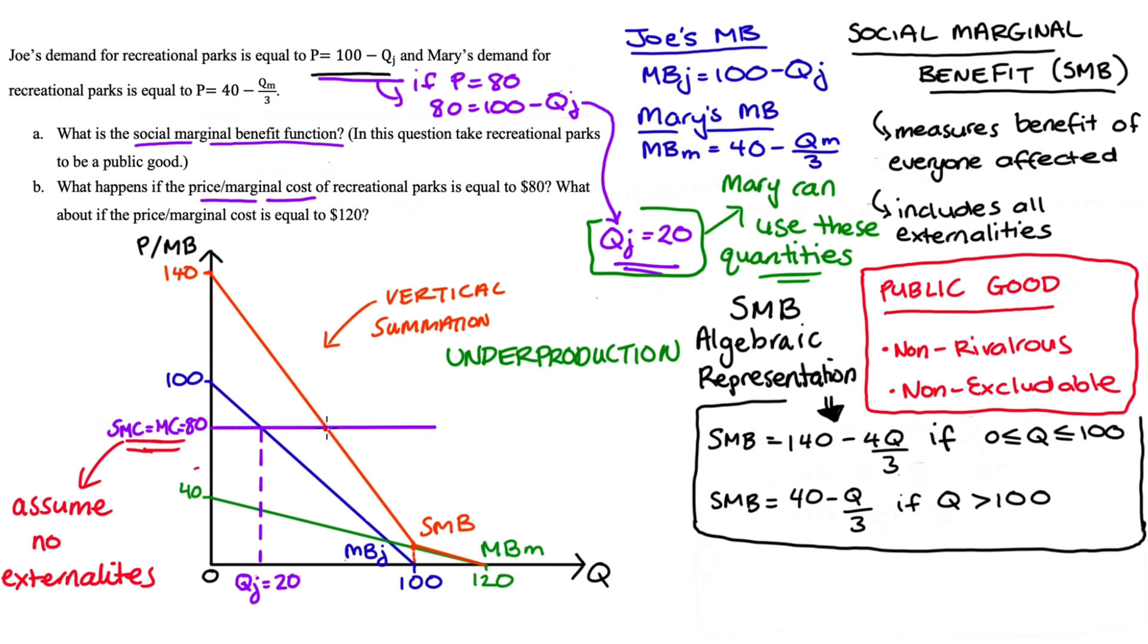I won't get into the theory too much here because I think it's best left to a video all on its own. It's enough to say that theoretically this is the point of production we should be aiming for if we want to be efficient. So that quantity q* and you can see it's greater than 20 so buying 20 would be an under production.